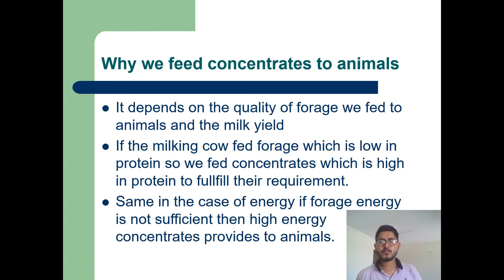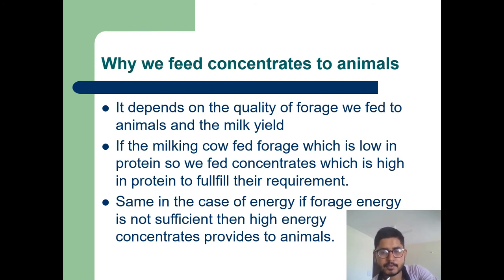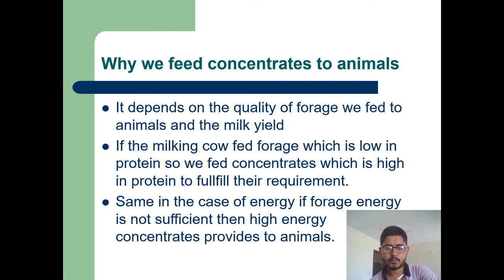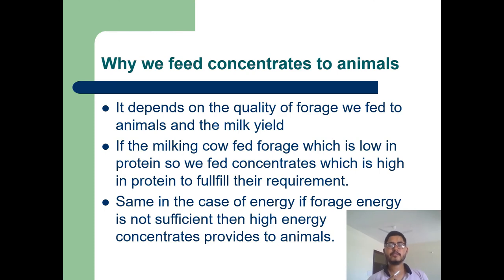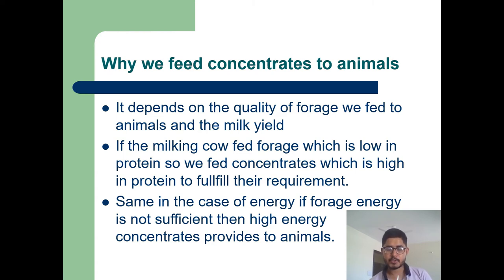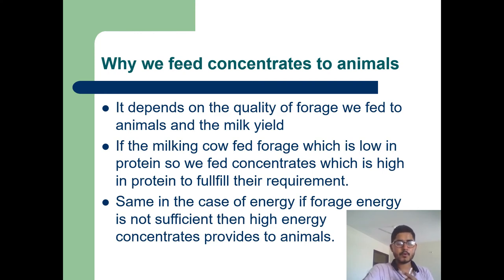Why do we feed concentrates to animals? It depends on the quality of forage fed to animals and the milk yield. If we feed forages which are low in protein, obviously the animals need protein to fulfil their requirements, so we feed them protein-rich concentrates. If the forage energy is not sufficient, then high-energy concentrates are provided to animals. This affects milk production because milk production needs energy, sugars, protein, and fats.